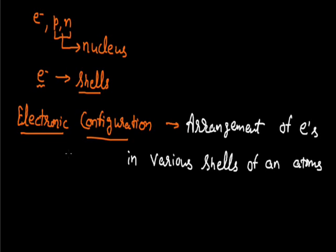We will see what are the different rules or conditions to keep in mind while writing the electronic configuration of any element. The very first condition is to know how many total electrons are there to arrange in various shells. For example, if someone asks us to write the configuration of lithium.